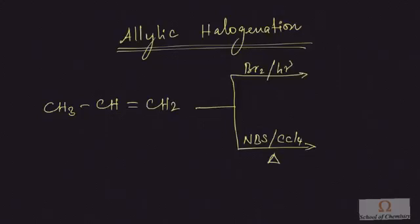Today we are going to see allylic halogenation. The allylic position of alkenes can be halogenated with many reagents: N-bromosuccinimide (NBS), N-chlorosuccinimide, and tertiary butyl hypochlorite are some reagents. Among these, N-bromosuccinimide (NBS) is one of the most important reagents.